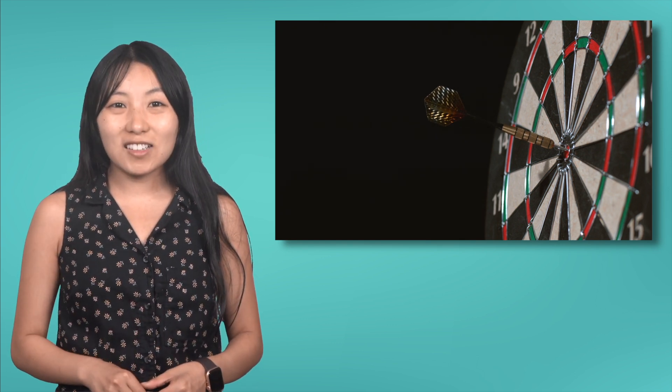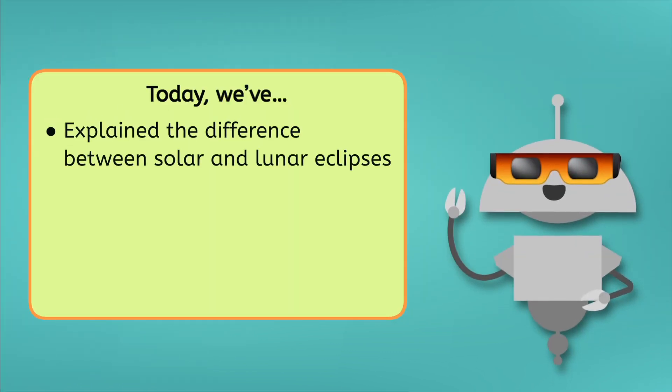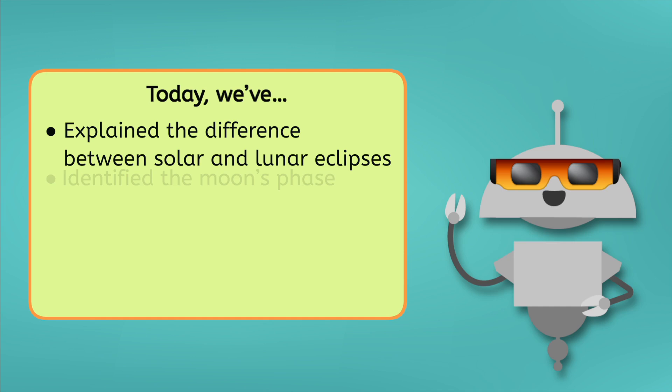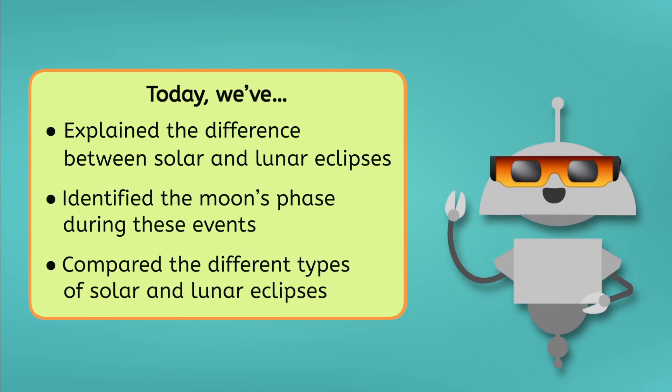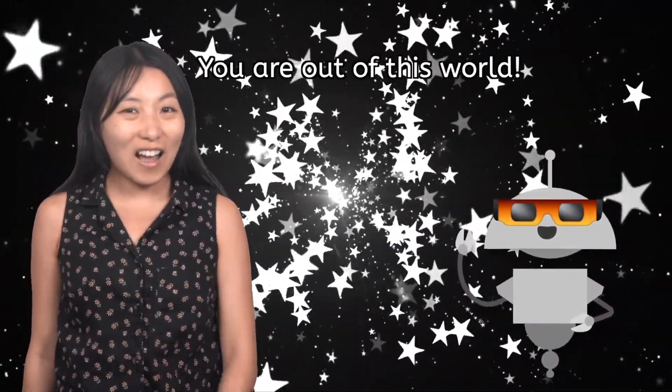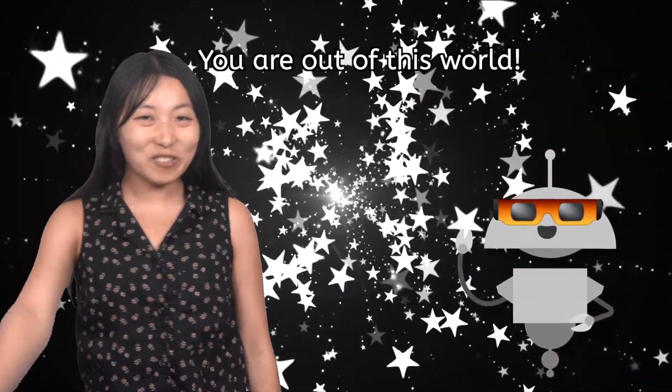The next time you hear about an eclipse, you'll know exactly why it's happening, what to expect, and then you'll be ready to witness the magic. Today, we've explained the difference between solar and lunar eclipses, identified the Moon's phase during these events, and compared the different types of solar and lunar eclipses. You can dive deeper into what we've covered today by exploring the additional activities for this lesson. Until then, keep looking up at the stars, and remember, you are out of this world. See you soon!